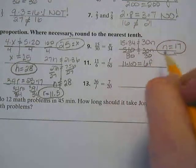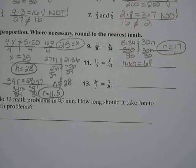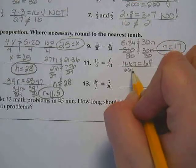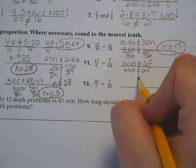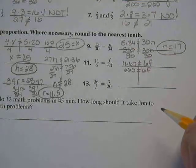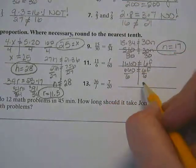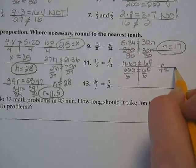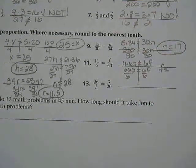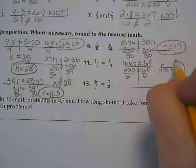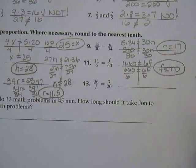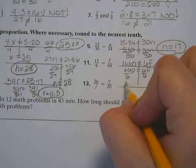All right, number 11. Cross products, 11 and 60. So 11 times 60 equals 6F. 11 times 60 is 660. Now to get F by itself, I'm going to divide by 6. So F equals 110. If I divided by 10, it would have been 66.